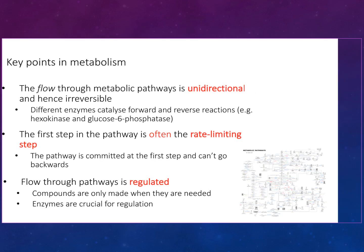The flow through metabolic pathways is unidirectional and hence irreversible. Different enzymes catalyse forward and reverse reactions, such as hexokinase and glucose-6-phosphatase. The first step in the pathway is often a rate-limiting step — the pathway is committed at the first step and cannot go backwards.